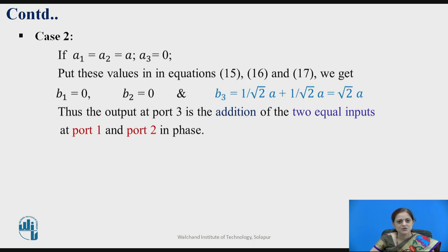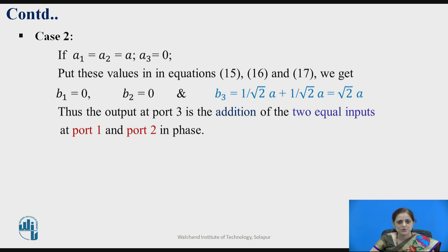Case 2: A1 = A2 = A, that is the same input is applied to port 1 and port 2, with no input at port 3 (A3 = 0). Substituting these conditions, the output at port 1 is 0, output at port 2 is 0, and output at port 3 equals (1/√2)A + (1/√2)A, which is the addition of the two inputs. Thus, the output at port 3 is the sum of the two equal in-phase inputs at port 1 and port 2.